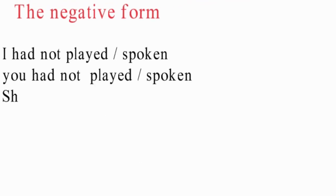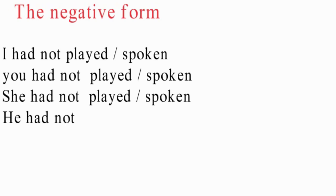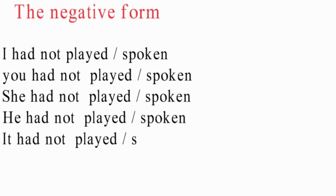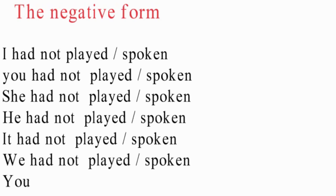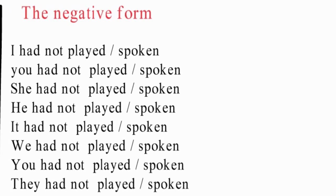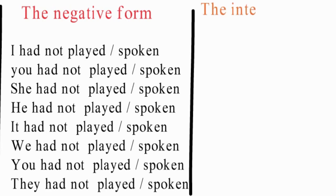In the negative form, you can say: I had not played or I had not spoken; you had not played or you hadn't spoken; she had not played or she had not spoken; he had not played, he had not spoken; it had not played, it had not spoken; we had not played, we had not spoken; you had not played, you had not spoken; and they had not played, they had not spoken.